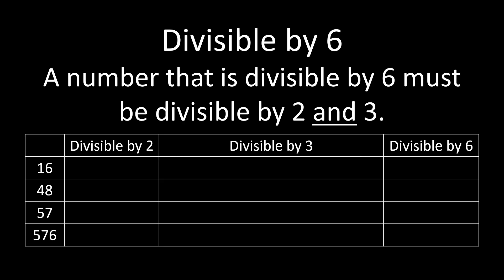With 16, for it to be divisible by 2, it has to be an even number, so we'll look at the final digit, the 6. 6 is an even number, so 16 is divisible by 2. Then we'll need to test for divisibility by 3, which means we'll take the digits 1 and 6, add them together, and we get 7. If we divide 7 by 3, we don't get a whole number. So 16 is not divisible by 3, and therefore it's not divisible by 6.